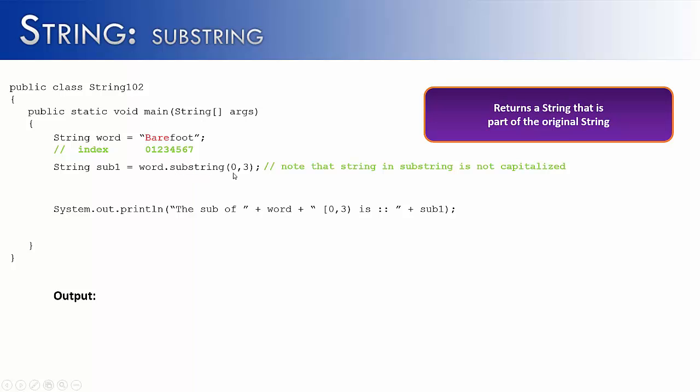So the way the method works is the first argument is the starting index. And the last argument is the ending index. So I'm going to go from 0 to 3, and hopefully that will print bare. And then I'm going to print it out down here. And let's see what this prints out. It says the sub of barefoot 0, 3 is bar. Now wait a second. I didn't want bar, I wanted bare.